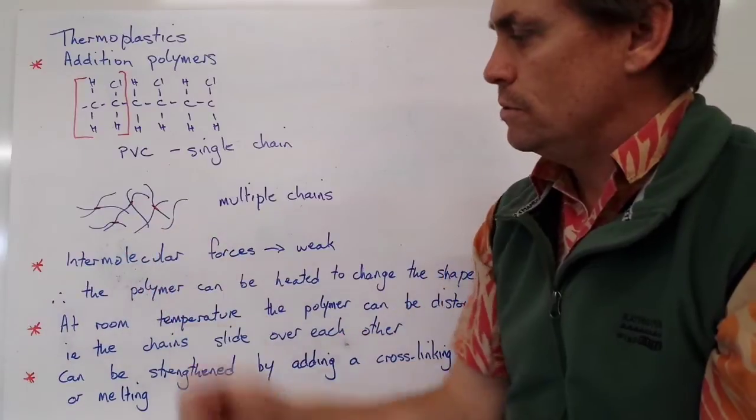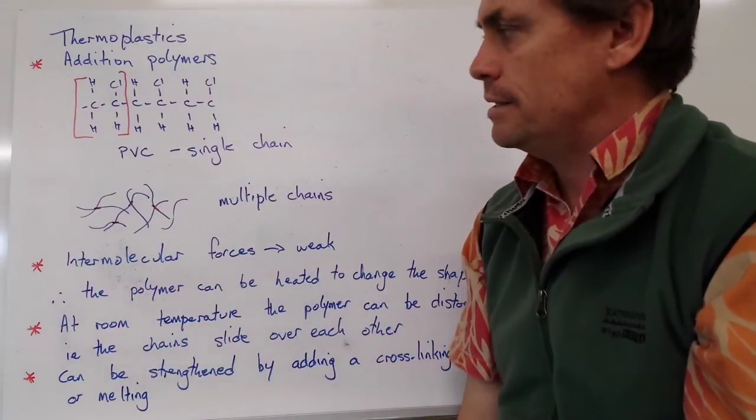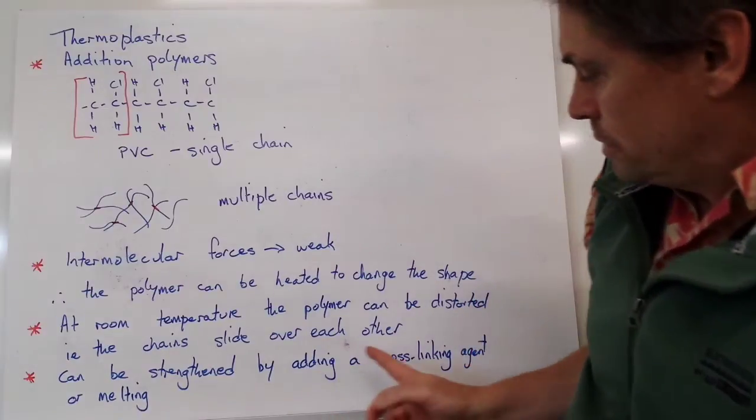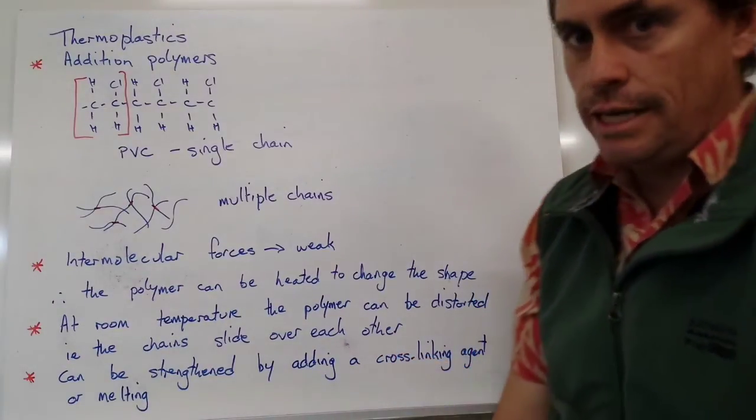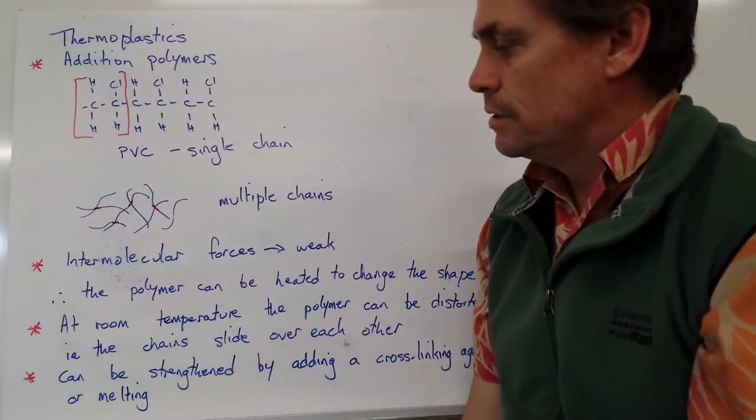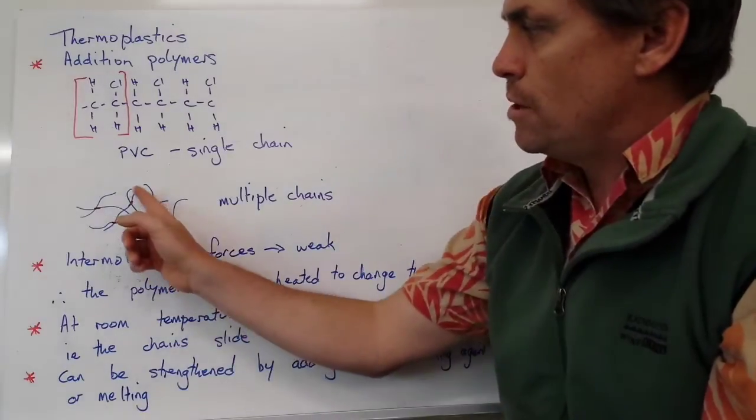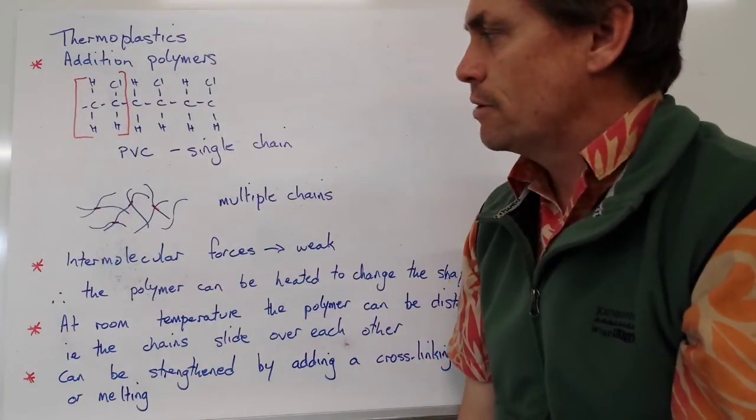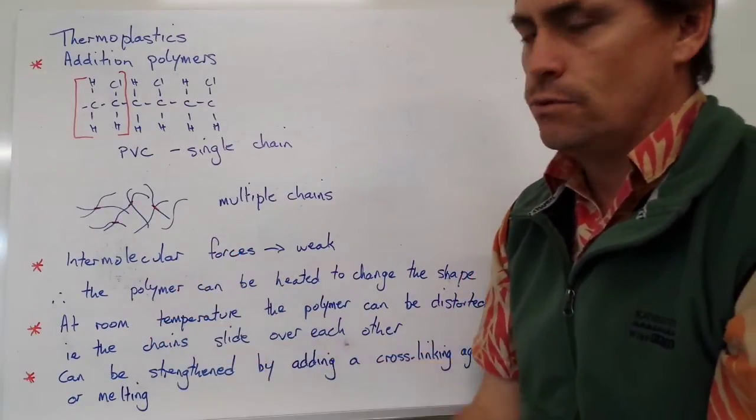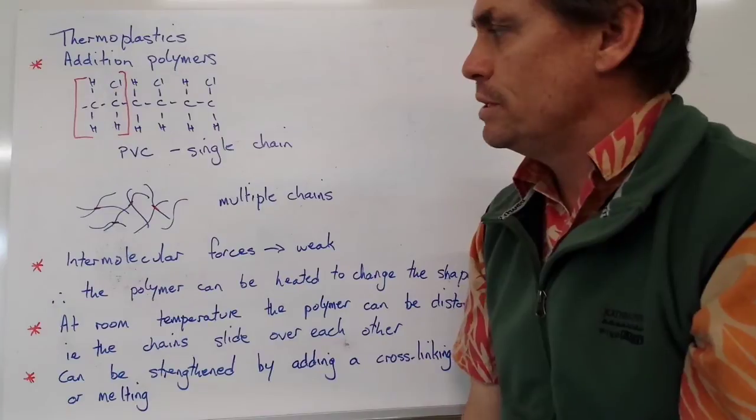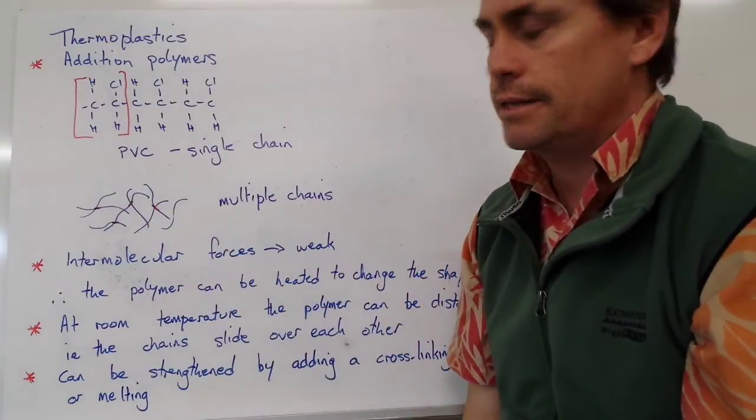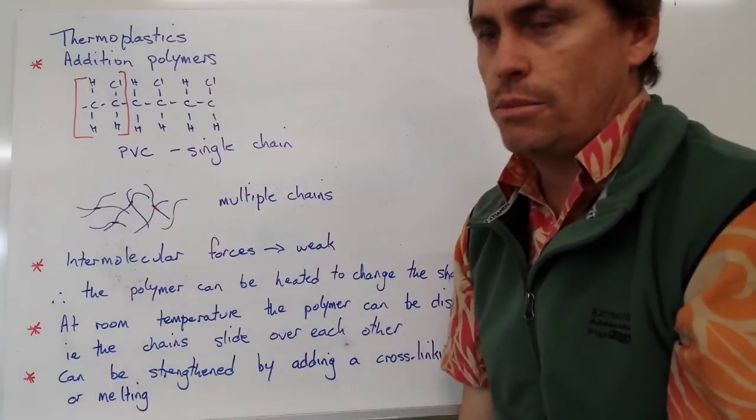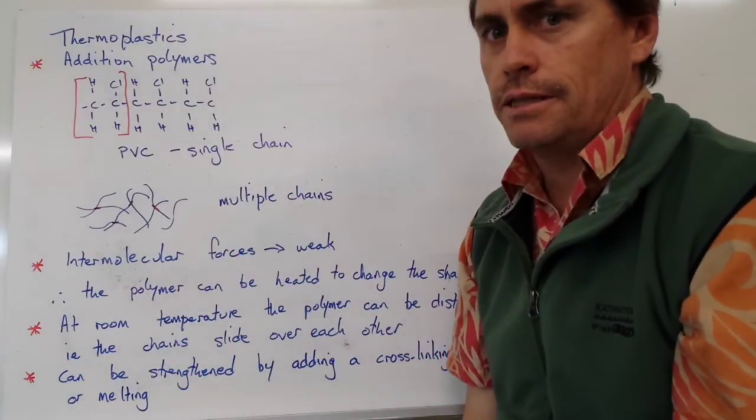We can strengthen this type of molecule in two ways. First, we can add what's called a cross-linking agent, some other sort of chemical that promotes more interaction between the polymer chains, therefore increasing the intermolecular forces and making it more difficult to break those chains apart. This leaves us with a more rigid polymer rather than something that slides easily.